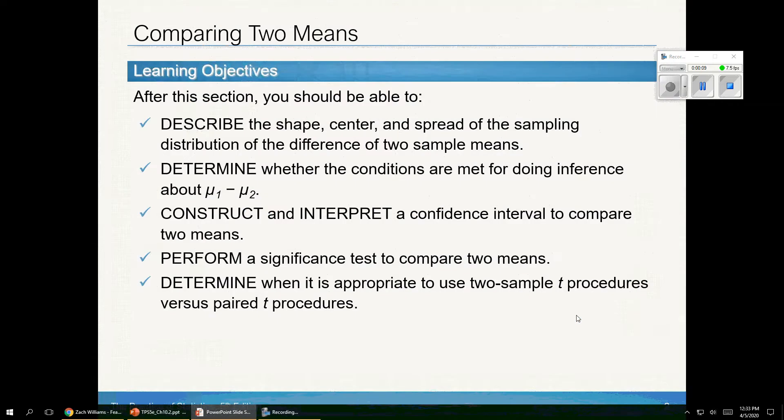In this section, we'll describe the center, shape, and spread of the sampling distribution of the difference of two sample means, similar to the previous section except now with means.